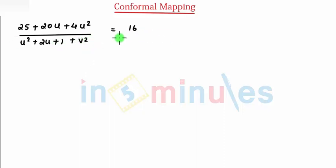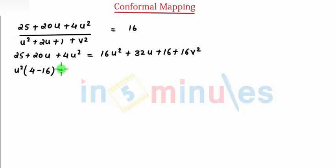So after solving this I get 25 plus 20u plus 4u square equals 16u square, I am multiplying here, plus 32u plus 16 plus 16v square. Once you take u square common you get 4 minus 16.